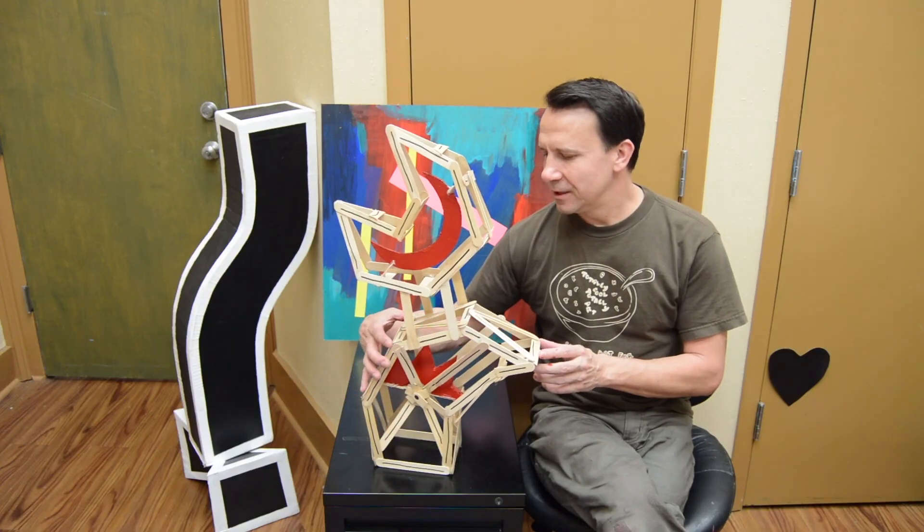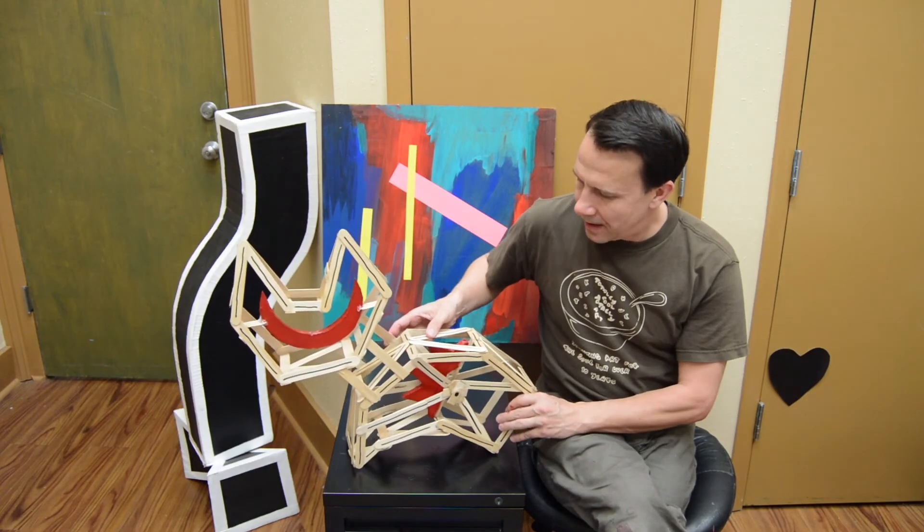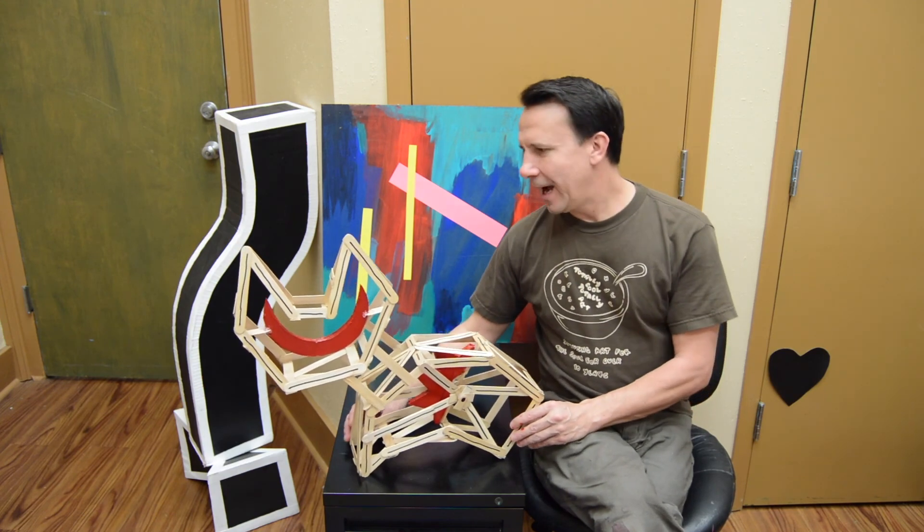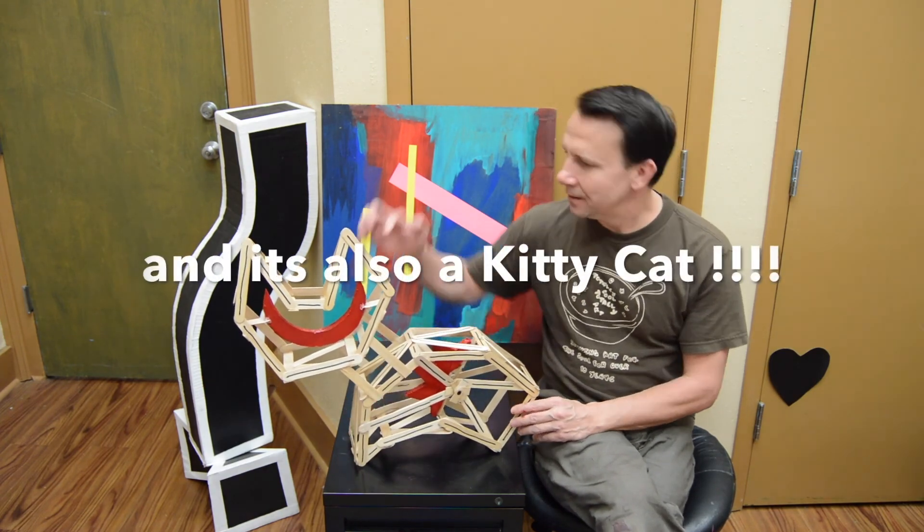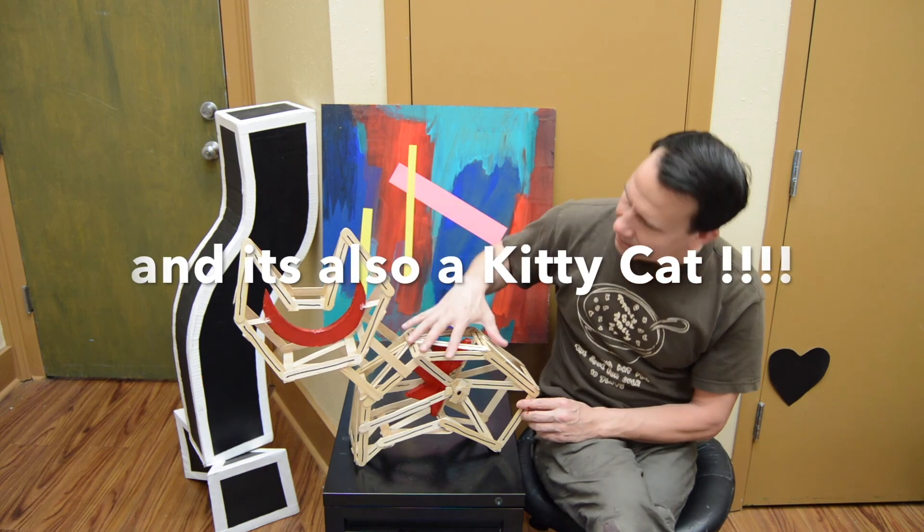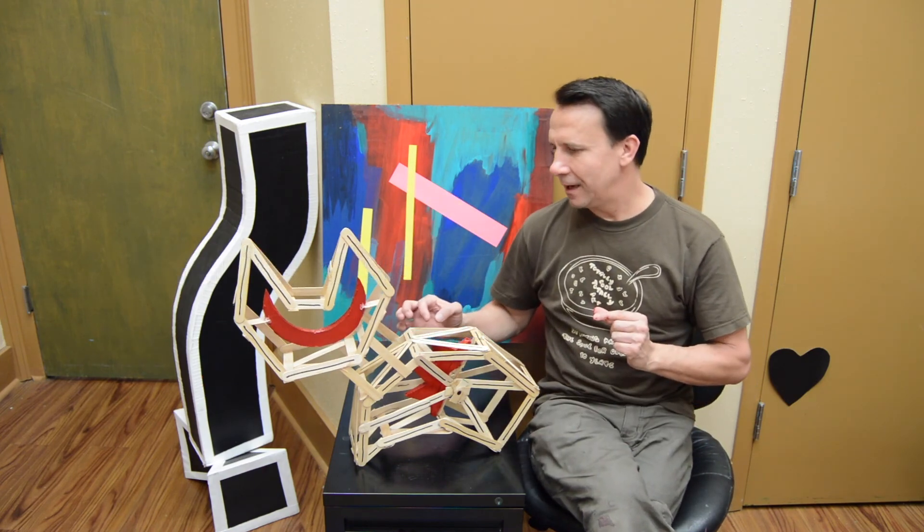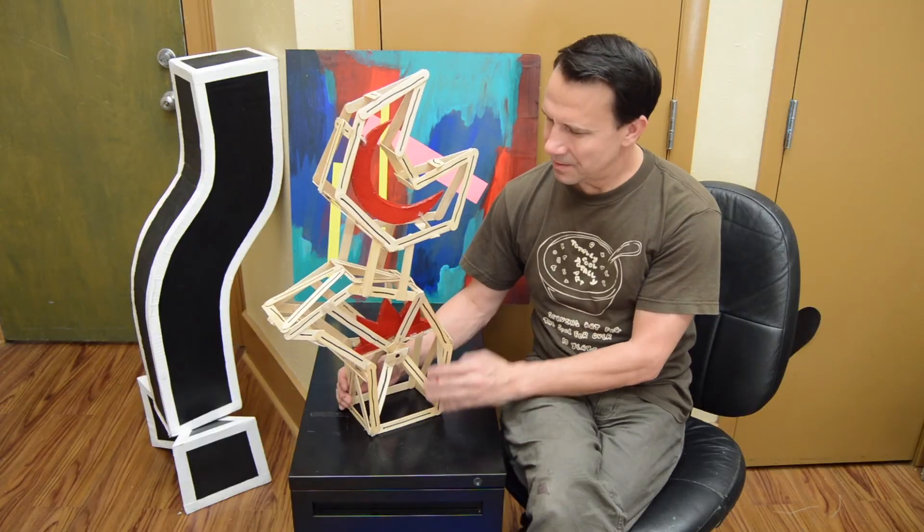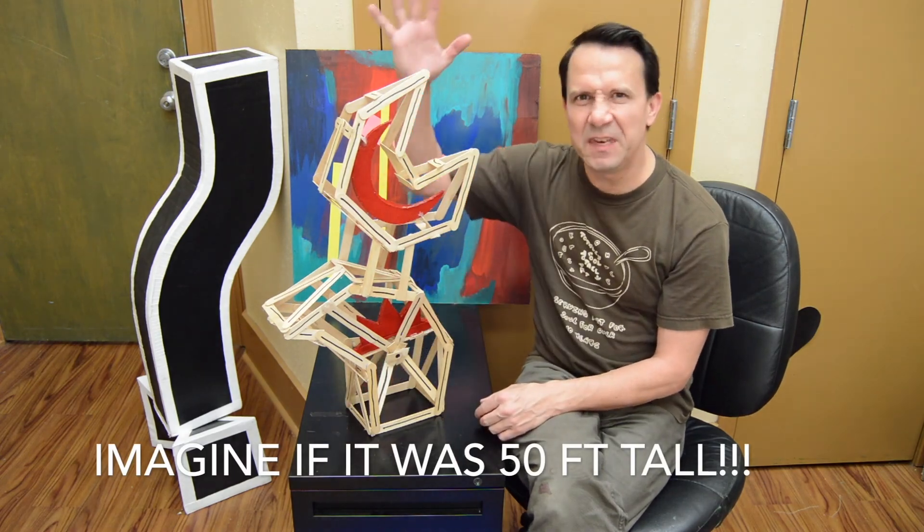So, ironically, when I was looking at this, I realized that it kind of looks like a little kitty cat, too, doesn't it? You see the little head and the little body. I might put a little tail on there. Because imagine this sculpture being 50 feet tall.